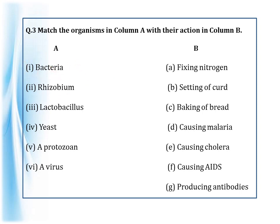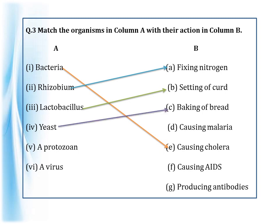Bacteria mainly causes infections or diseases — the main diseases being tuberculosis and cholera. Rhizobium is a nitrogen-fixing bacteria, so the answer is fixing nitrogen. Lactobacillus is found inside curd and helps in setting of curd. Yeast is mainly used for fermentation — baking of bread or alcohol production. A protozoan called plasmodium causes malaria, and its carrier is the female Anopheles mosquito. Viruses cause AIDS, which stands for Acquired Immunodeficiency Syndrome.